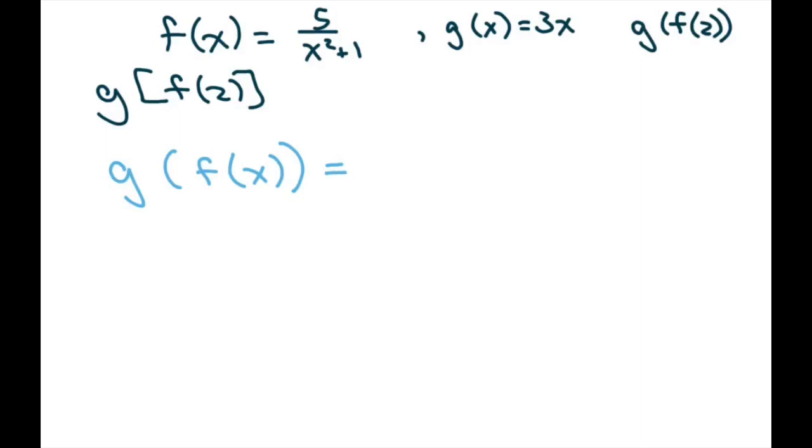You're plugging in f as the inner function. So you're plugging in f into this x here. So we write down g, and then wherever there's x, which is here, we're going to plug in our f(x), which is 5 divided by x squared plus 1. So that gives us 15 divided by x squared plus 1.